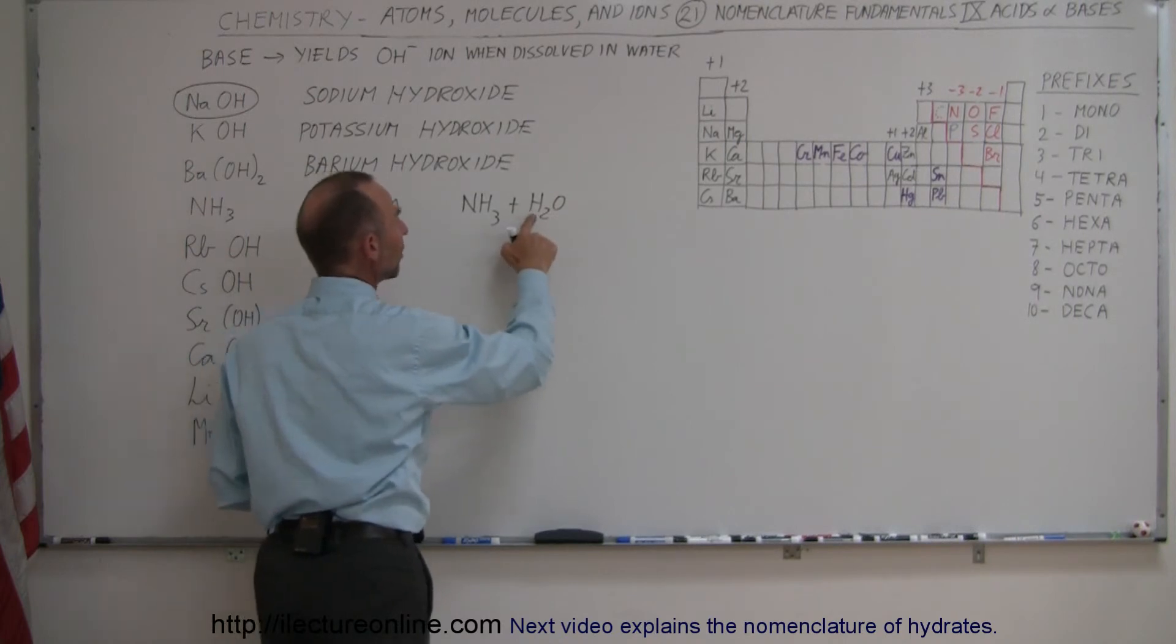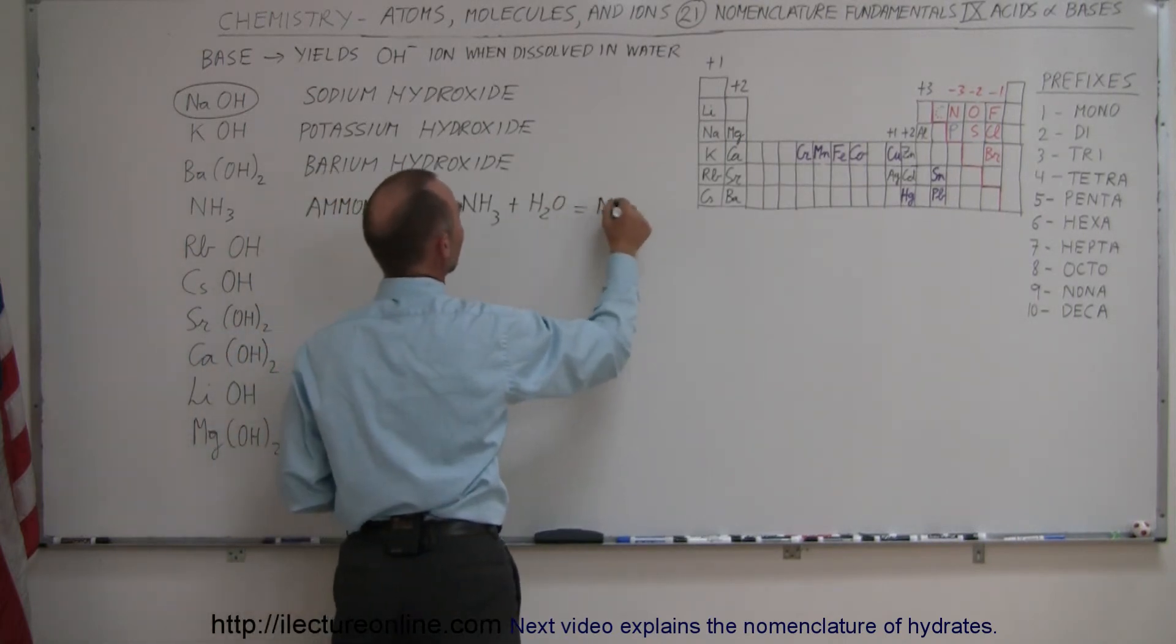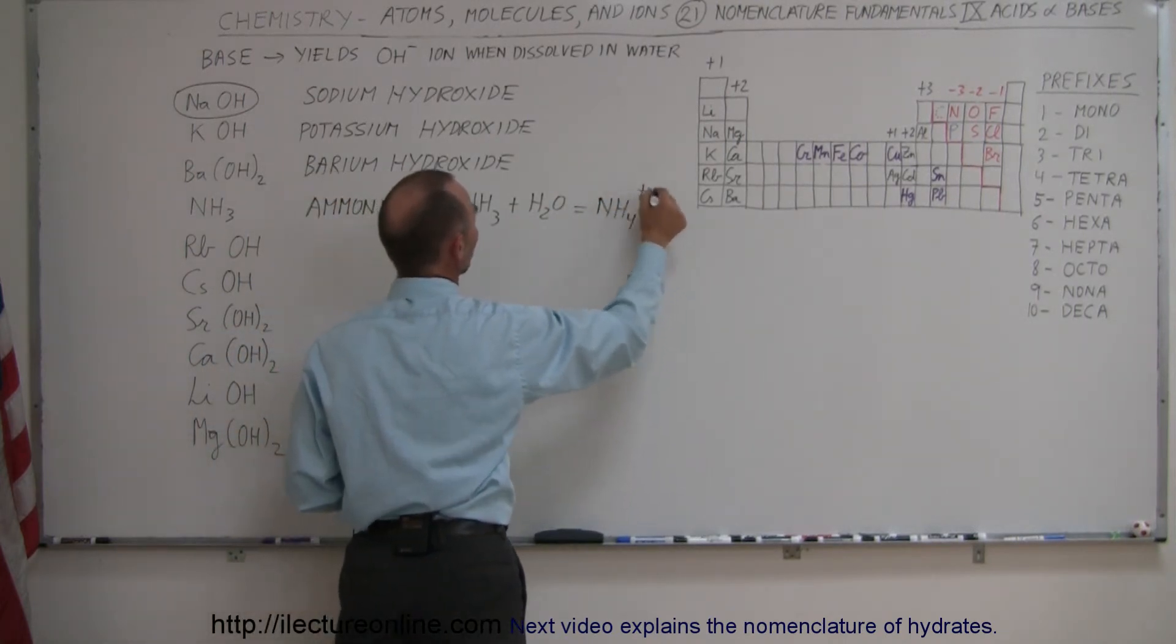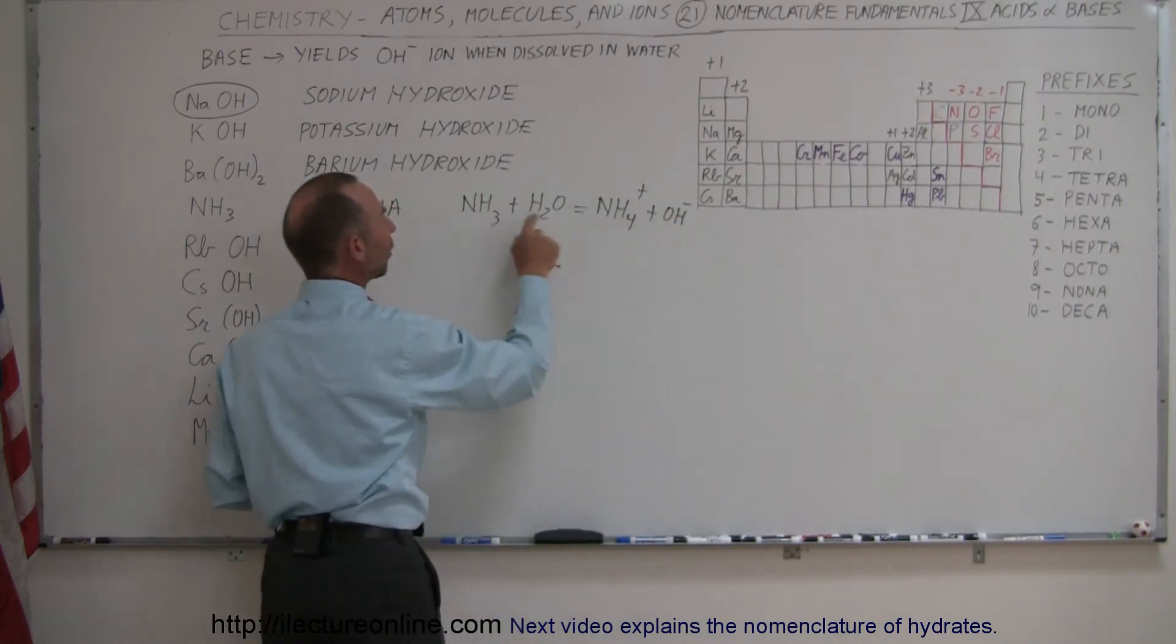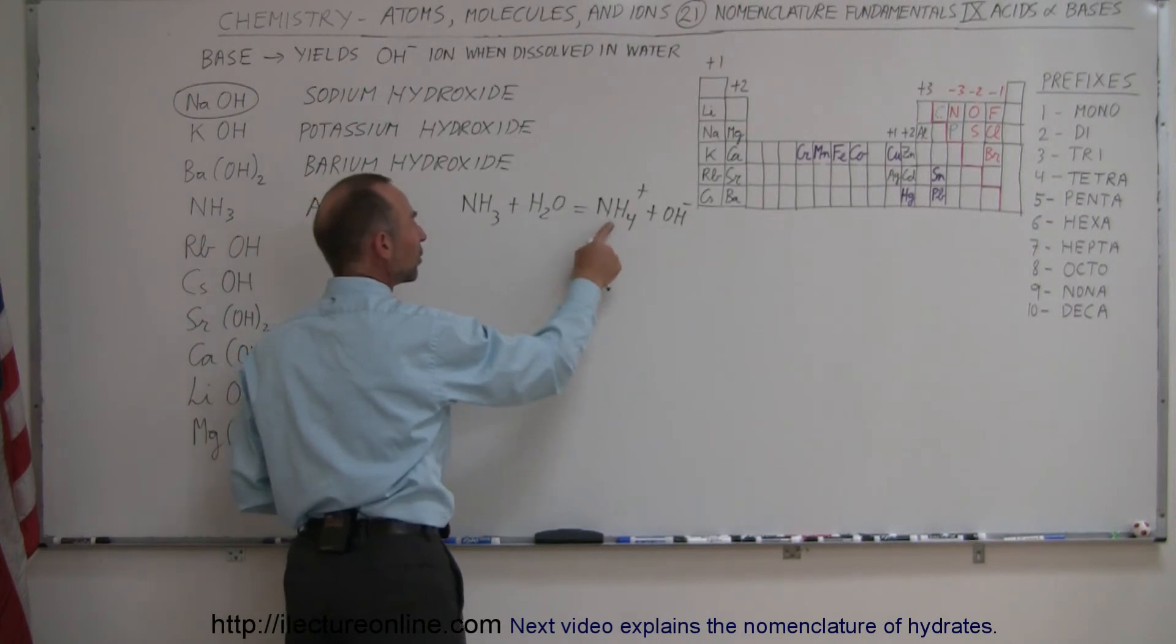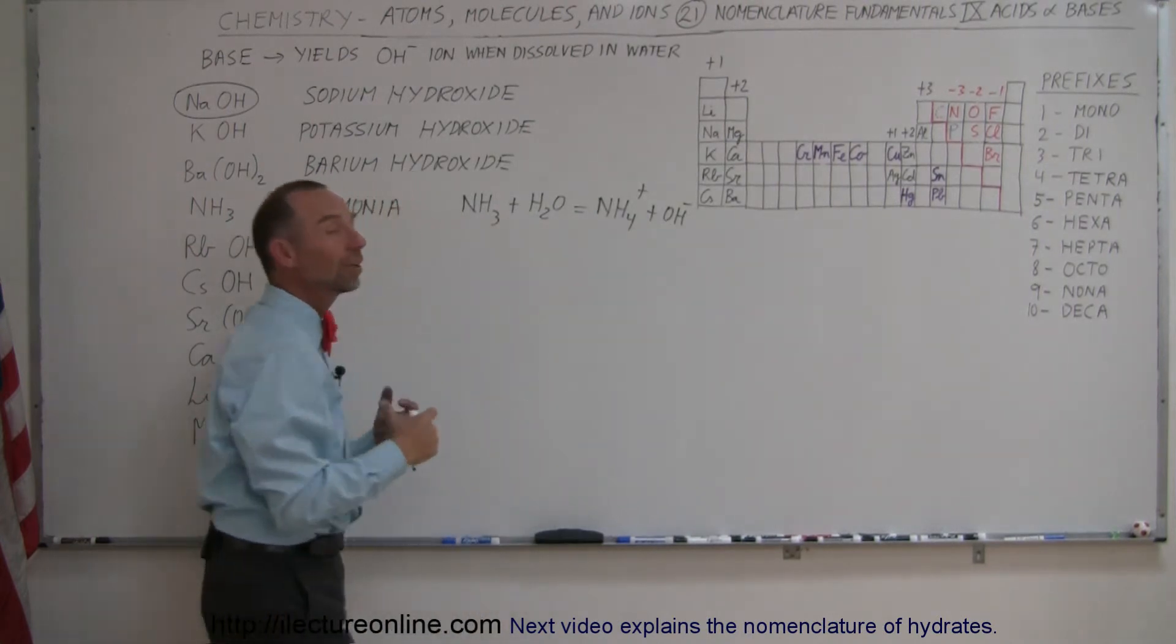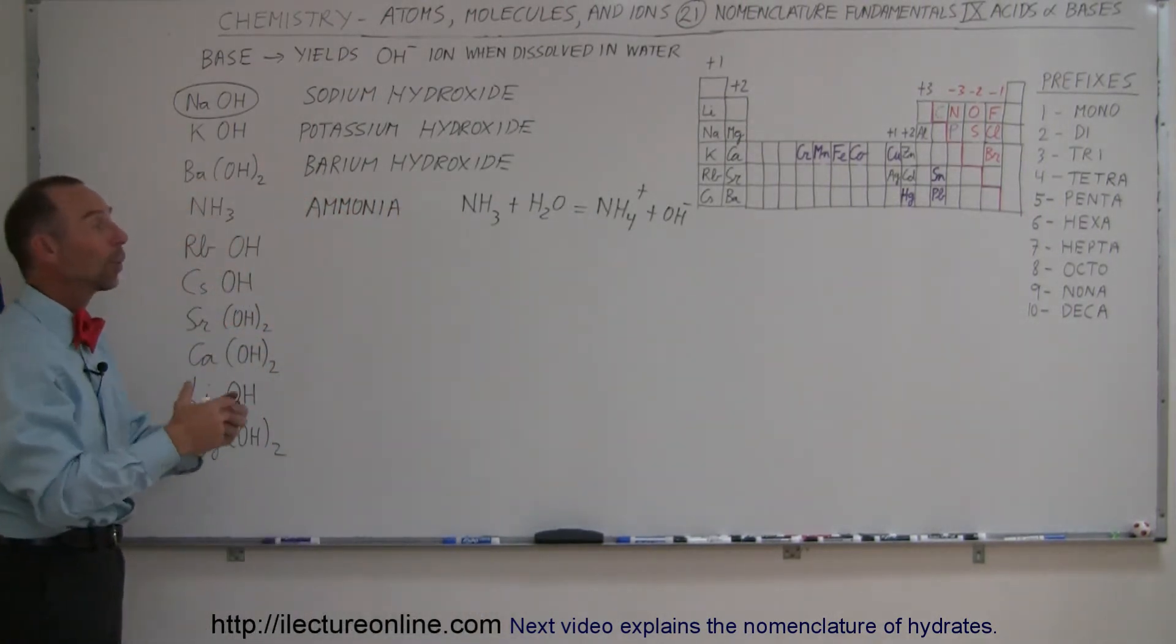So what's going to happen with ammonia is it's going to take NH3 and a water molecule H2O, and it's going to grab one of these and become NH4 plus and OH minus. That's how ammonia becomes the ammonium ion and it then delivers a hydroxide ion to the water, making the water more basic.